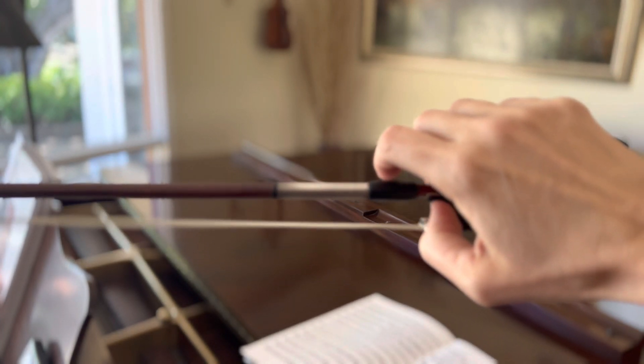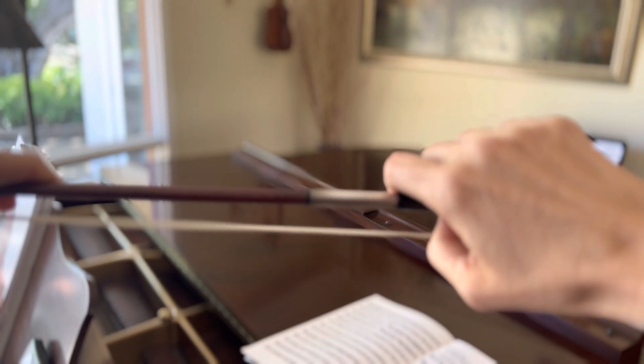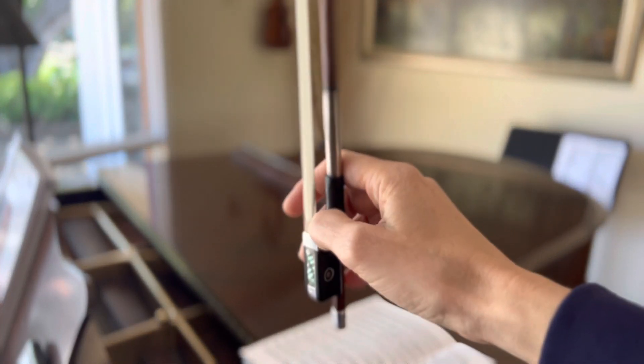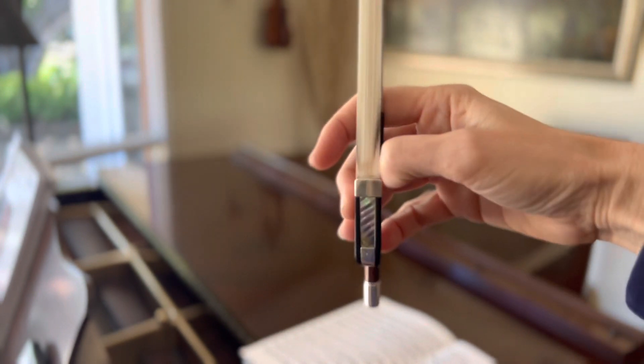Slide the bow into place. So now the thumb is just on the outside of the frog.